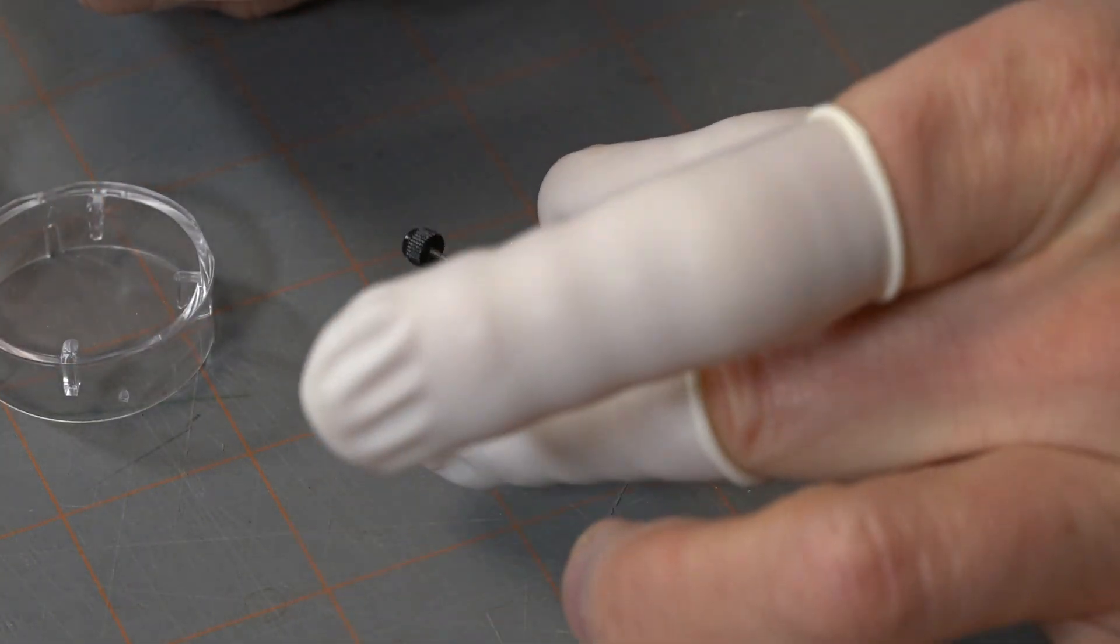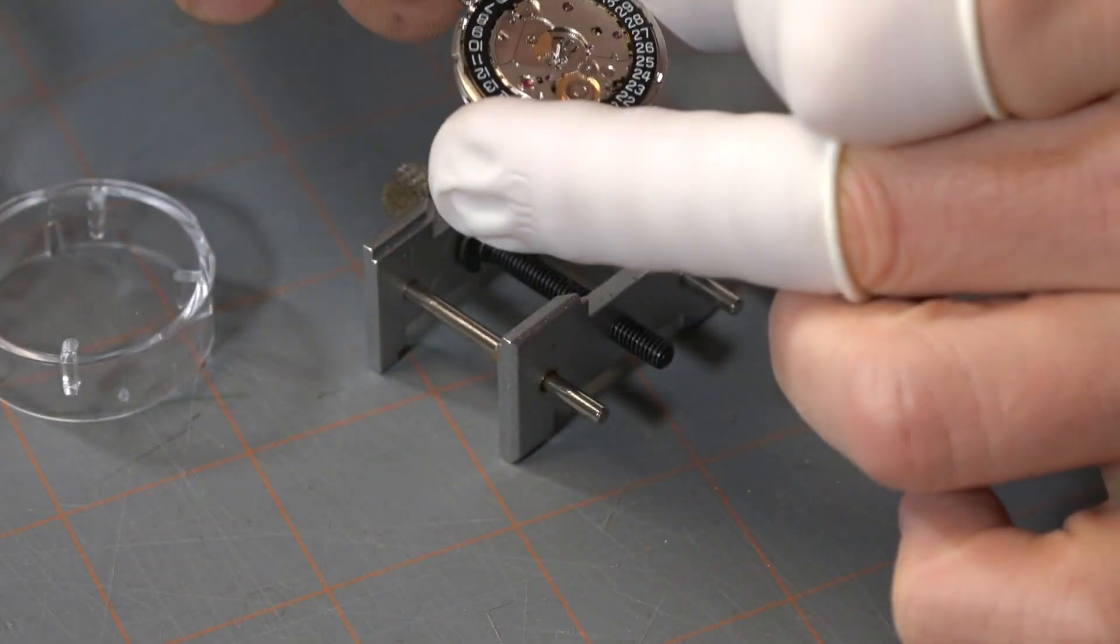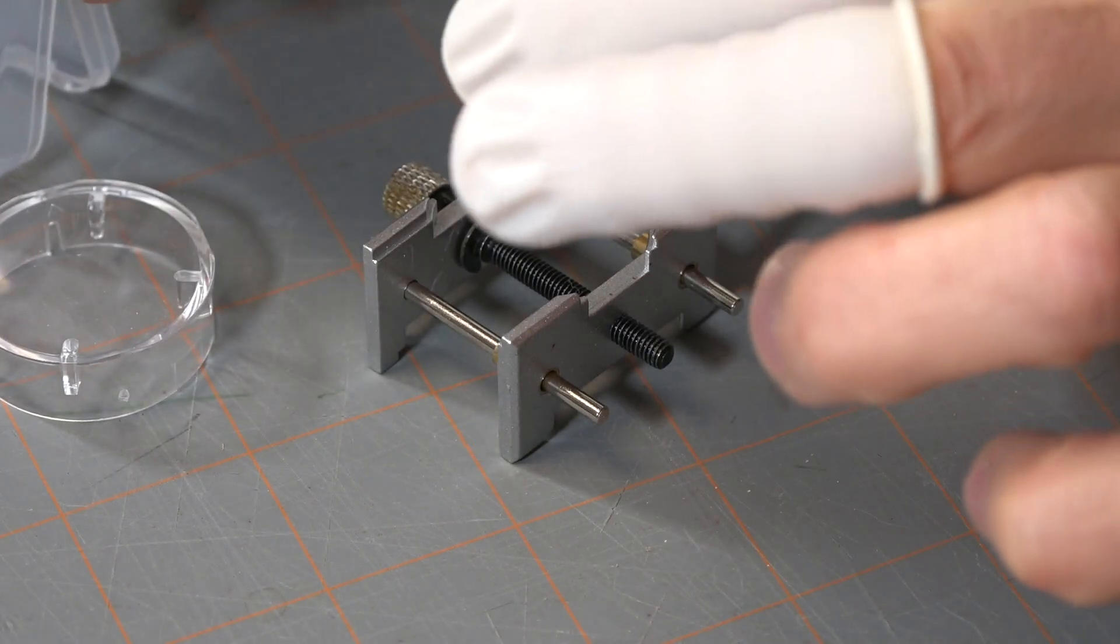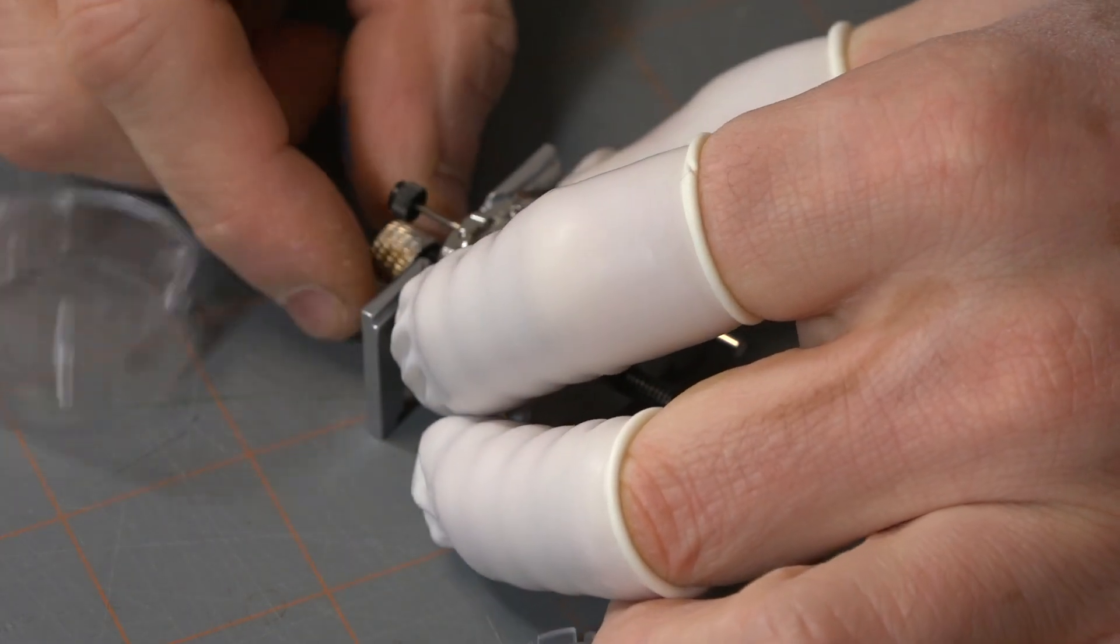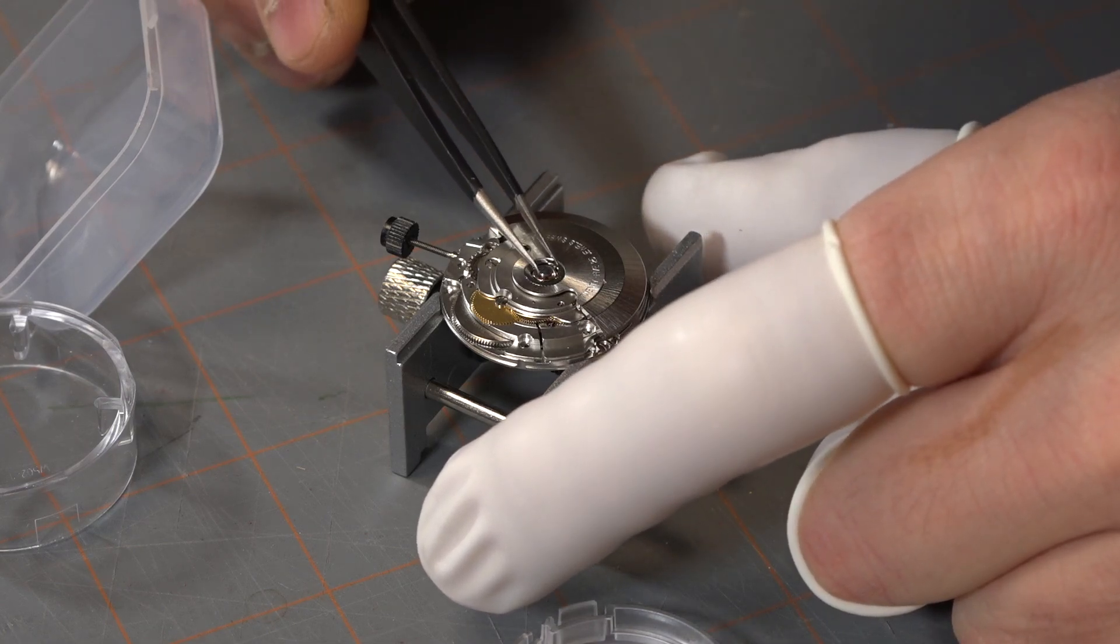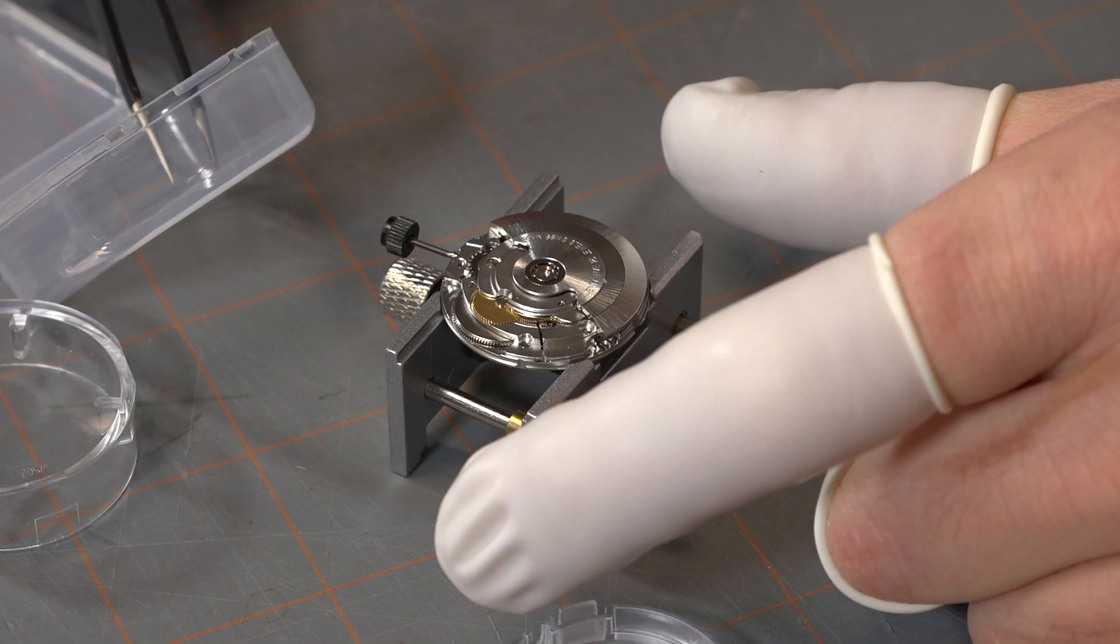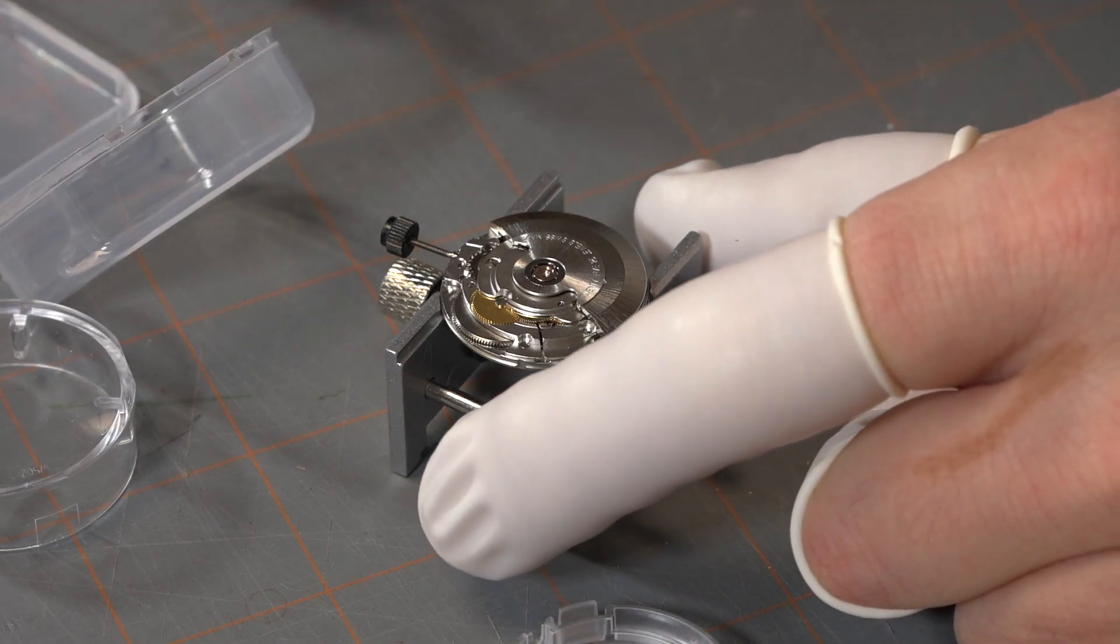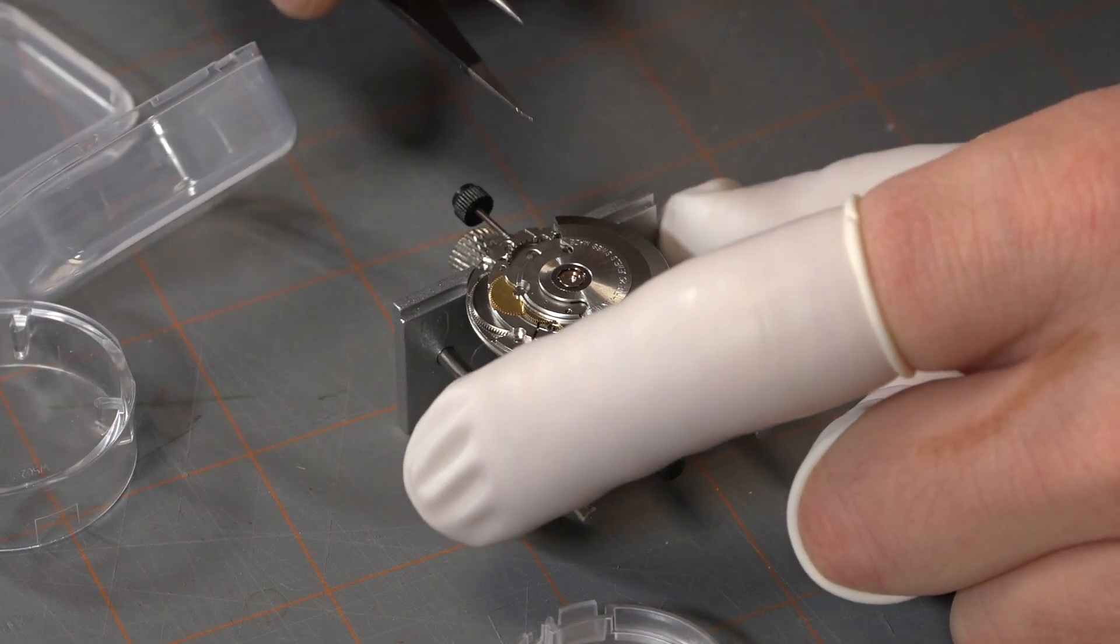I start by taking the movement out of its case and then flipping it over and placing it into a movement holder. I then take the rotor off. It is only in the way of what I want to do and I don't want to accidentally damage it. This rotor or oscillating weight is what winds the mainspring, and the mainspring is what powers the entire watch.